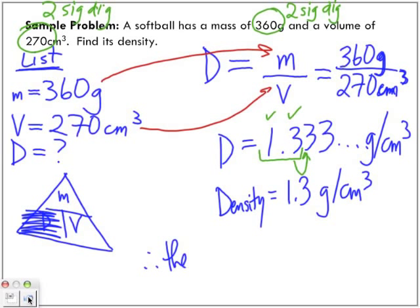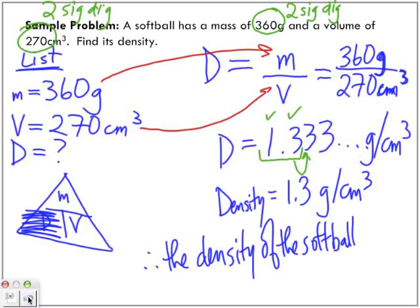Therefore, the density, that's what we needed to find. What is the object that we needed to find the density of? Therefore, the density of the softball is 1.3 grams per centimeters cubed.